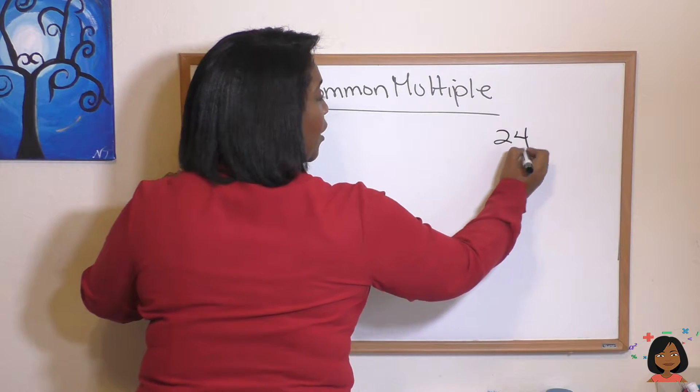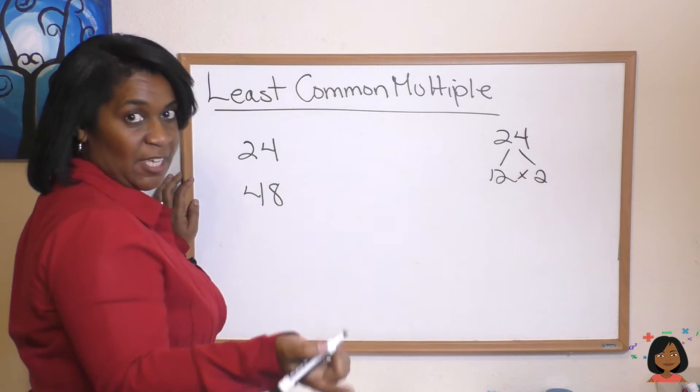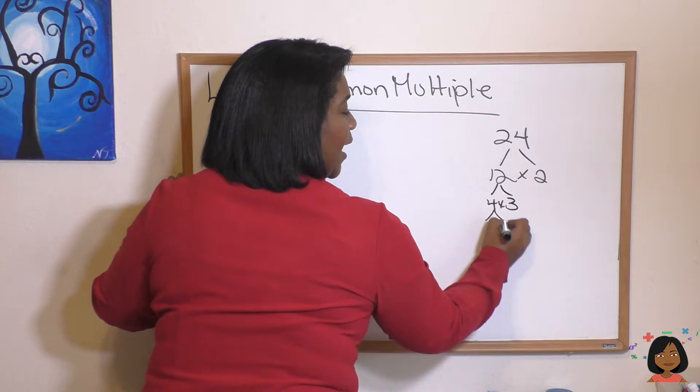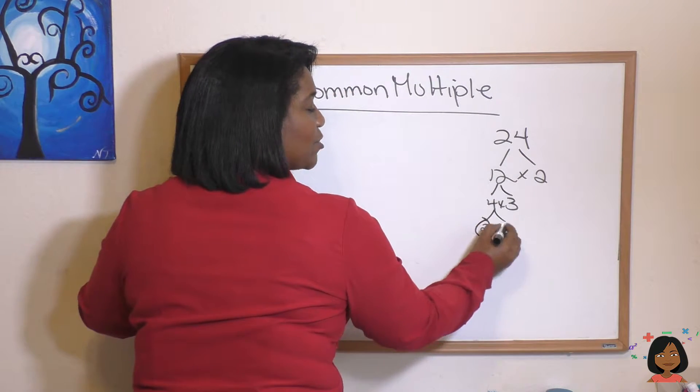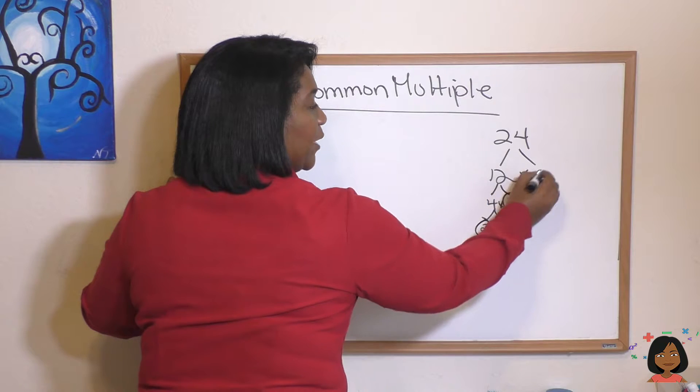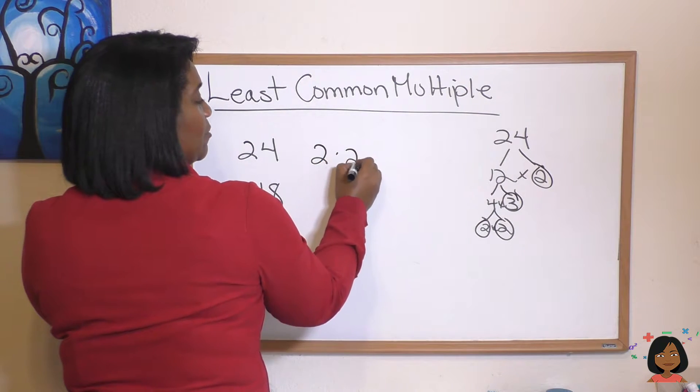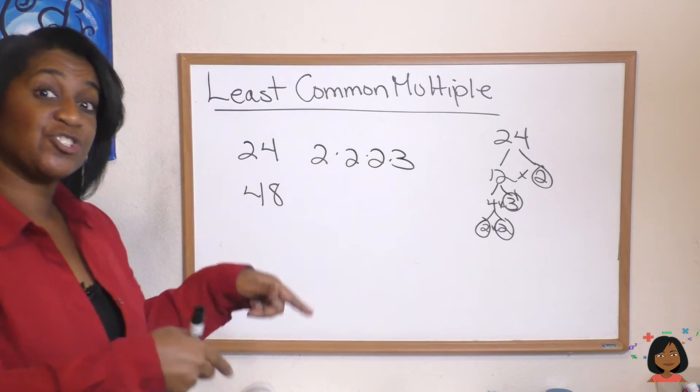So I know that twelve times two is twenty-four. Keep going on the twelve: four times three is twelve, and two times two is four. So here are my prime factors: two, two, three, and a two. So I'm going to write that over here: two times two times two times three.